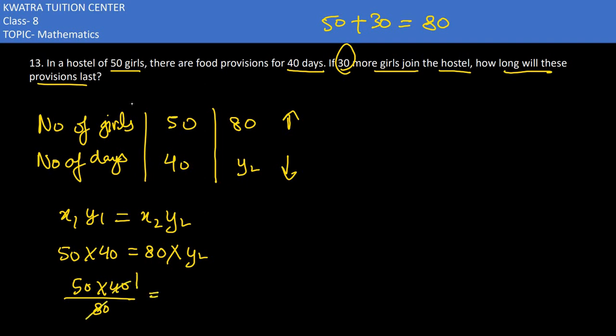Now 40 over 80, you can reduce 1 by 2. You can reduce 1 by 2, and 2 to 50 cancel, giving 25 which is y₂. This means how many days the food would last, which would be 25 days.